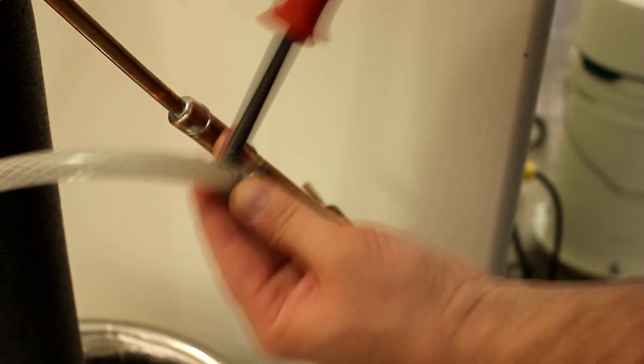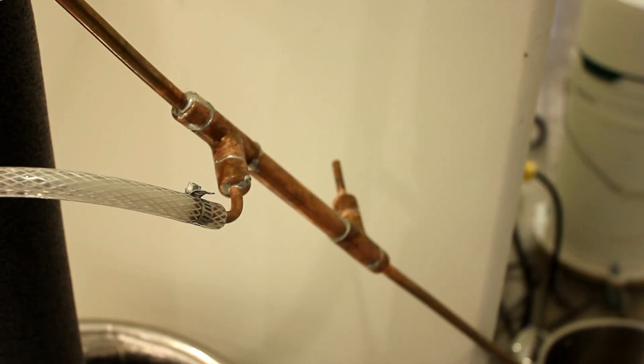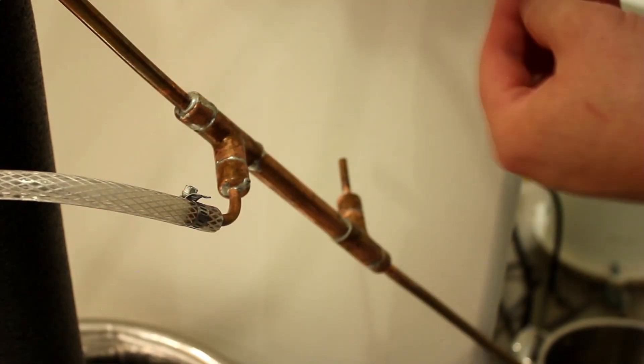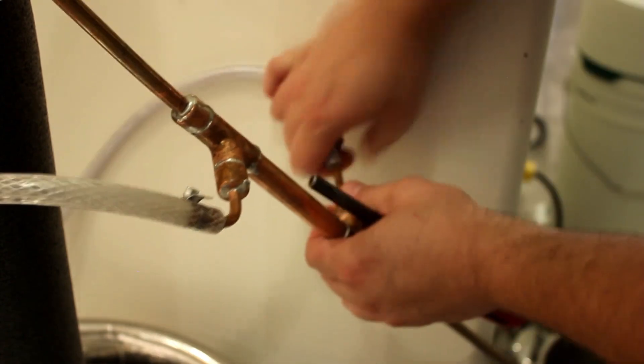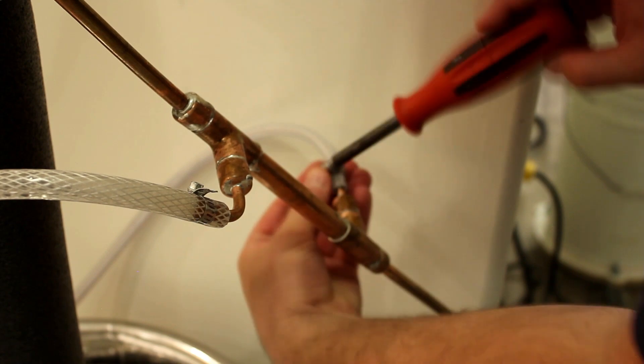In a shotgun condenser, once the vapor is condensed down to a liquid, it continues down the rest of the length of the condenser. Therefore, shotgun condensers have better performance during a stripping run than my liquid management still head.